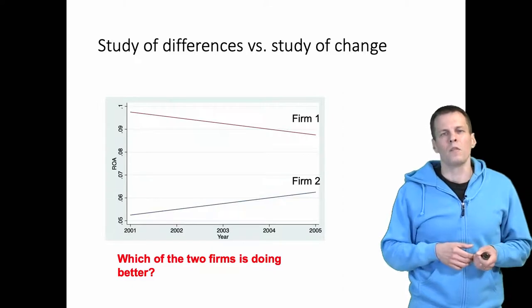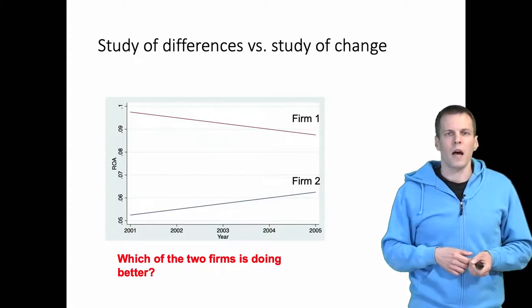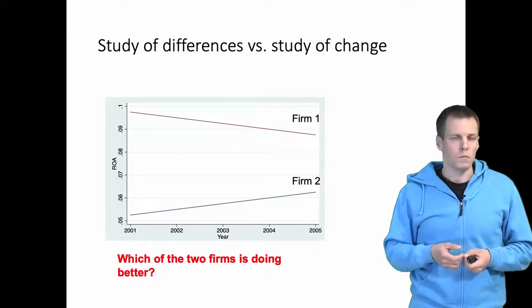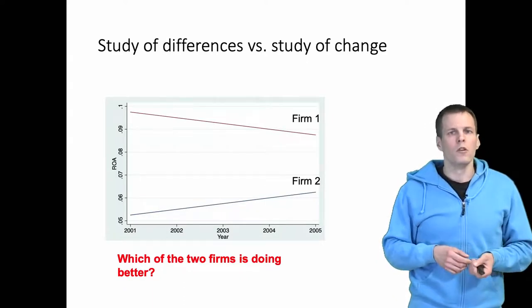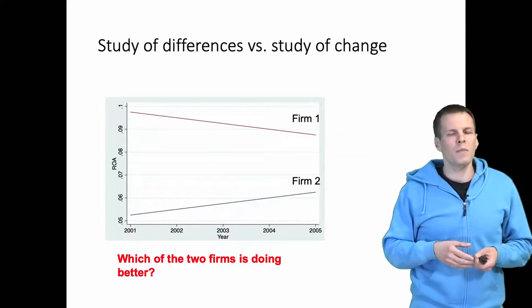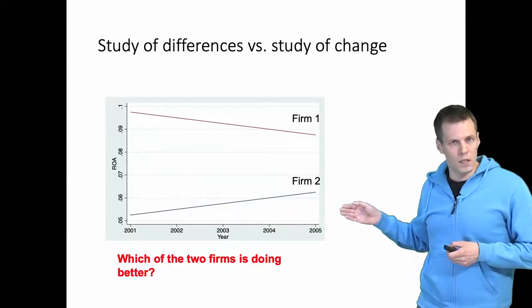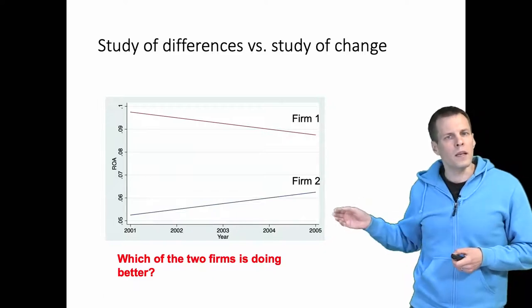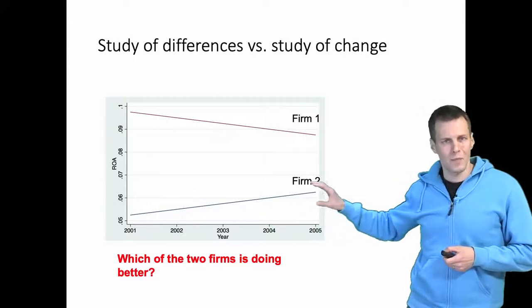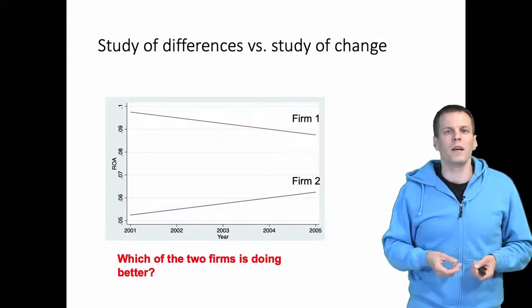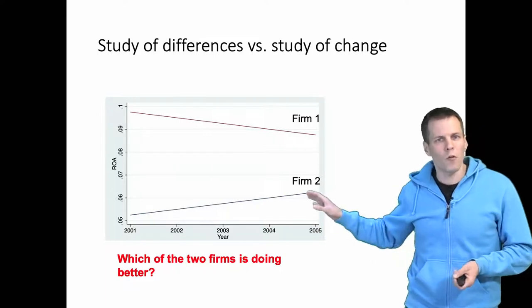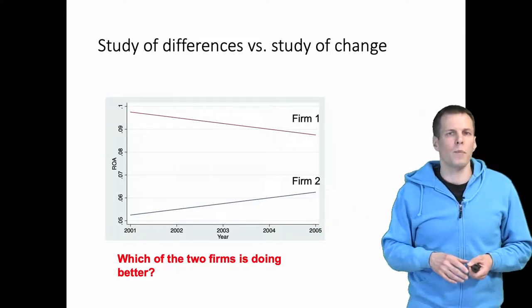If on the other hand we are managers of a company and we want to imitate either firm 1 or firm 2, we need to consider: do we imitate the company that is declining or do we imitate the company that is increasing its performance? This company is clearly doing something that causes its profitability to go up, and typically a manager would want their company to be more profitable, therefore imitating firm 2 is probably a better idea.